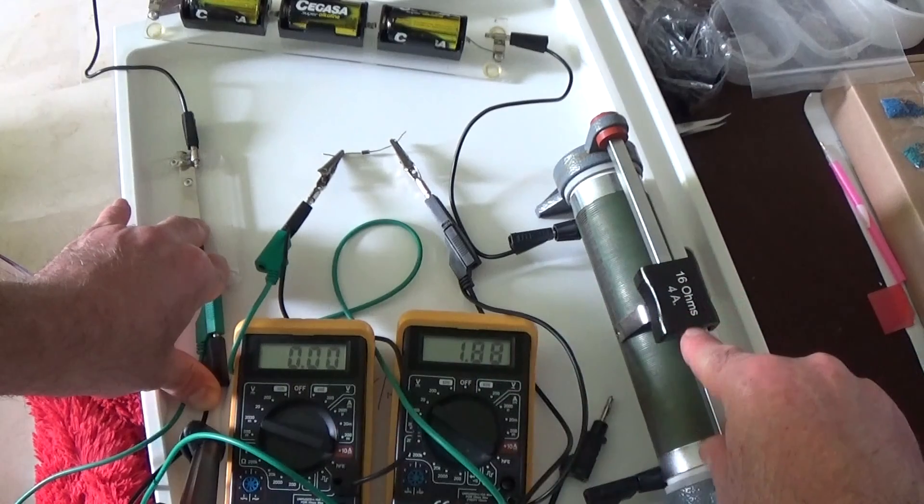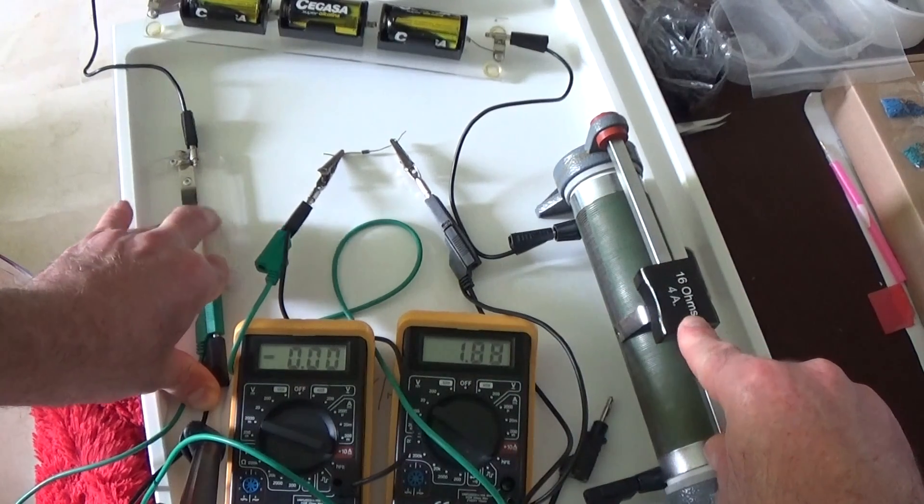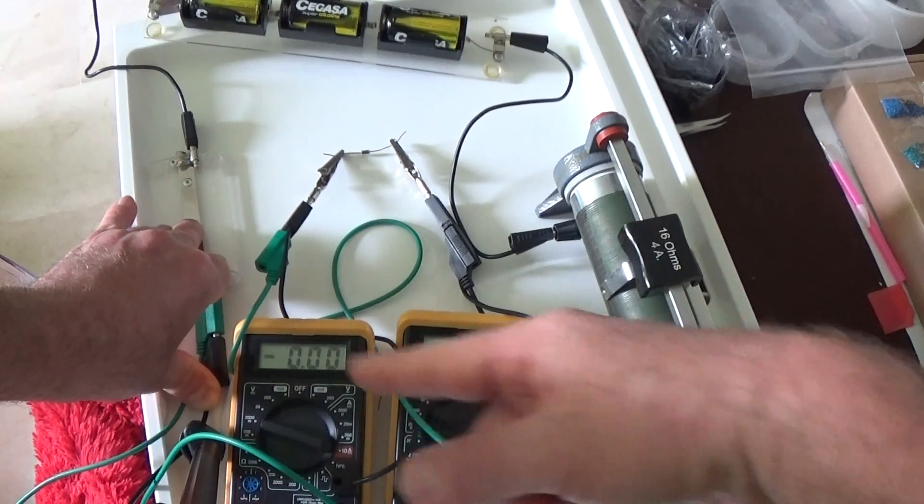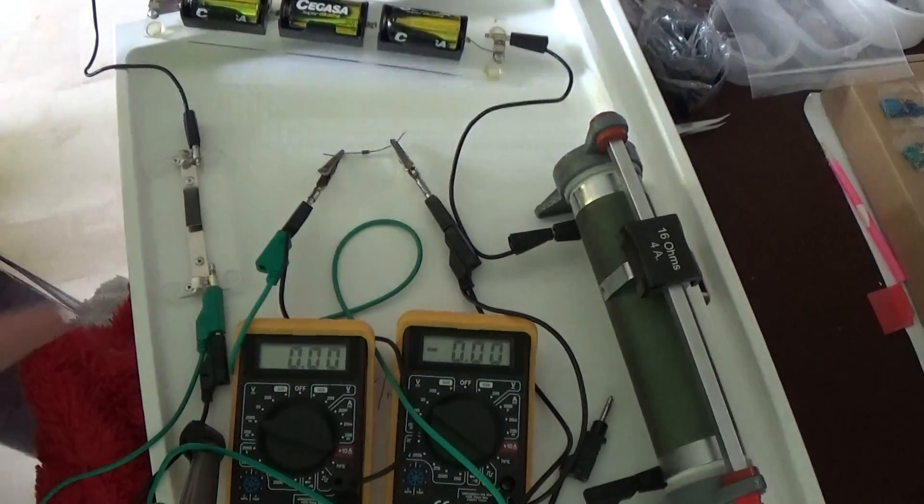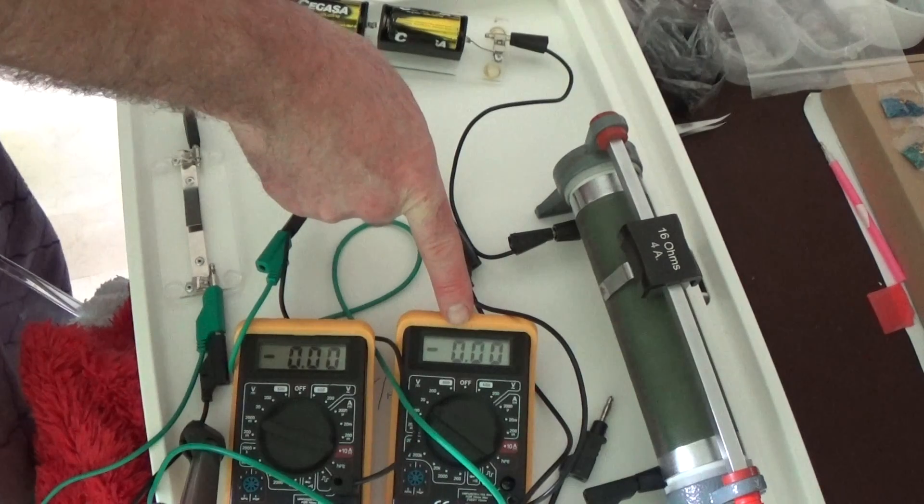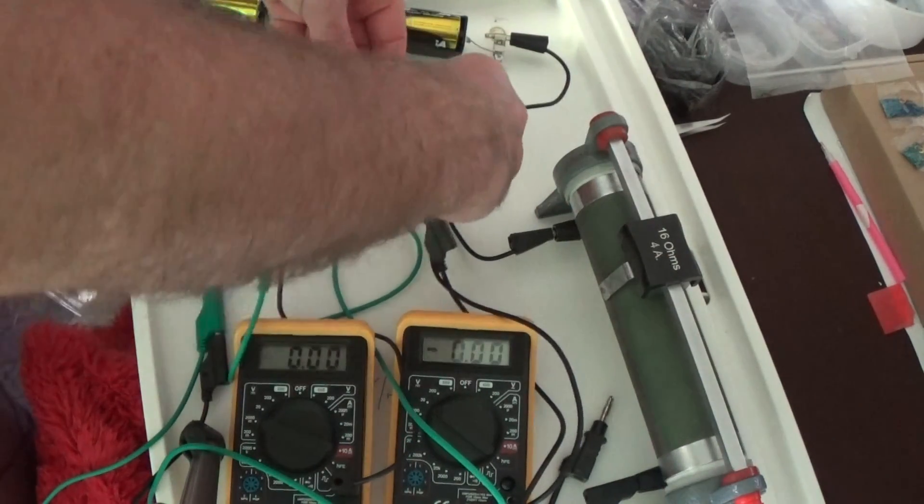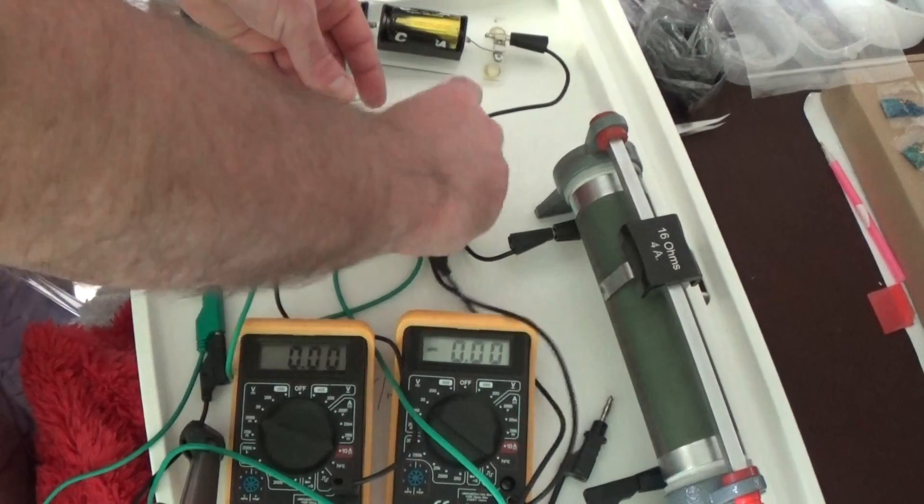0.00, 1.87. 0.00, 2.57. I have potential difference, I have voltage, but I don't have any current.